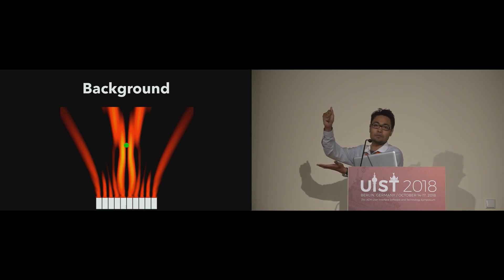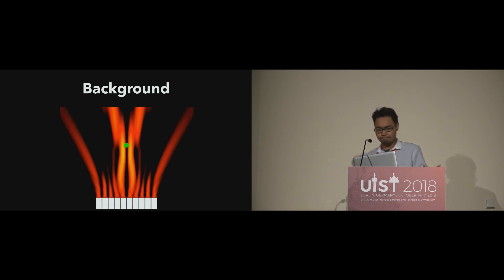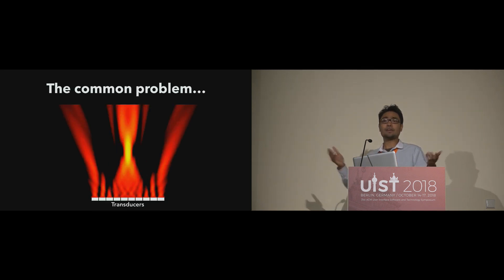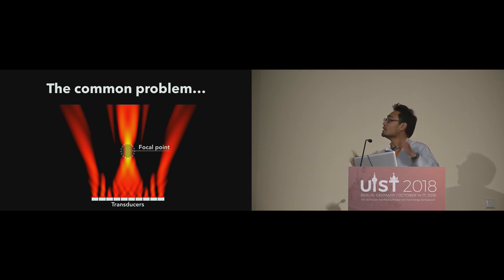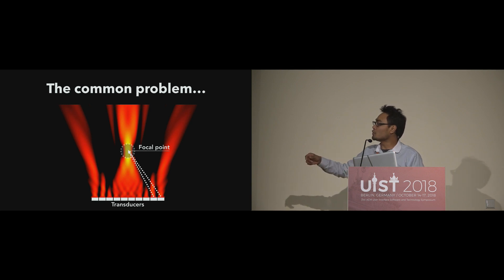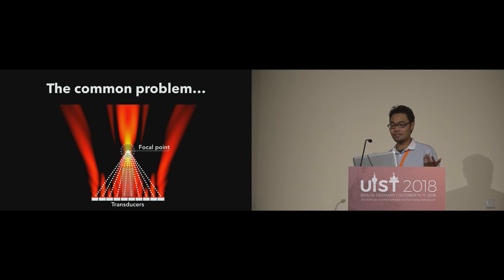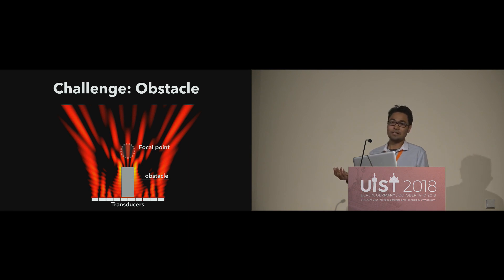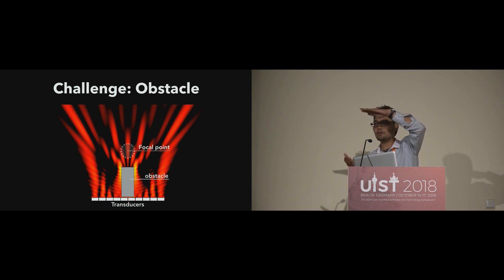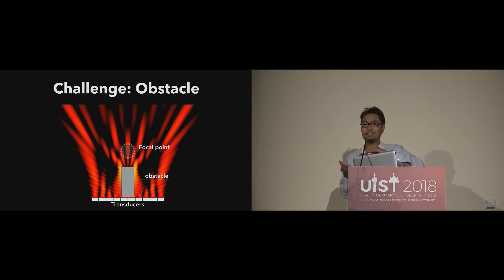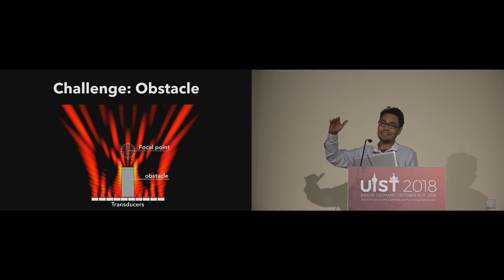Or you can increase complexity by having a single transducer with an object that levitates on top, which you can also manipulate. These sound field approaches share a common problem: to create a focal point, you need the contribution of all transducers. But if you have an obstacle in the way, you destroy the field because of the scattering effect. Then if you stick your hand on top, you won't feel anything; if you try to levitate an object, you're not going to get any object to fly.